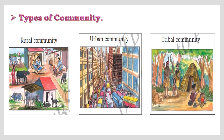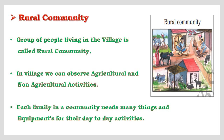Next are the types of community. Generally there are three types of communities: the first one is rural community, the second one is urban community, and the third one is tribal community. Observe the images given below.